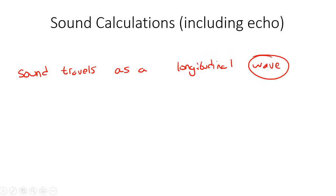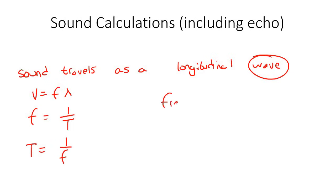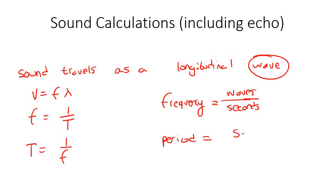Because it's a wave, we know that we can use all of the different wave equations. We could use 1 over period for frequency, and 1 over frequency for period. We could also remember that frequency is the number of waves divided by the number of seconds, whereas period is the number of seconds divided by the number of waves.